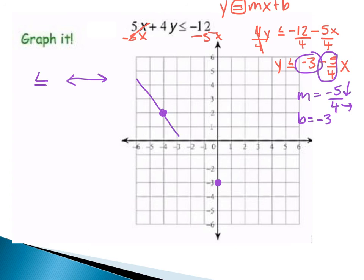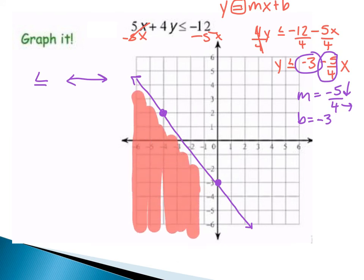I'm going to draw a solid line between these two points. Since the inequality is less than or equal to, I shade the region below the graph. This tells me that every point on the line and all the points in the shaded region would be a solution to this inequality. Make sure you jot down any questions and take a look at the steps. We'll see you in class — good luck on the practice problems and the mastery check. You've got your test coming up, so we'll see you in class.